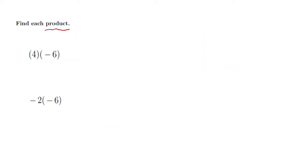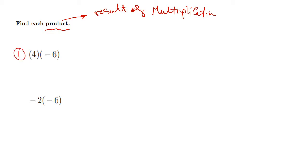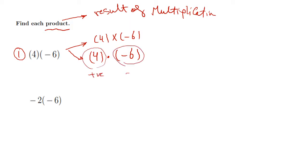Now let's define the product — the product is the result of a multiplication operation. In multiplication you have two cases: the two numbers have the same sign, or the two numbers have different signs. For example: 4 multiplied by negative 6 can be written as 4 × (−6) or 4 · (−6). Here 4 is positive and 6 is negative — when you multiply a positive by a negative, the answer is always negative. So 4 multiplied by 6 is 24, giving negative 24.